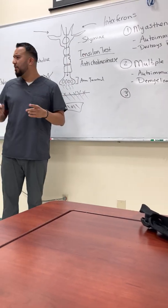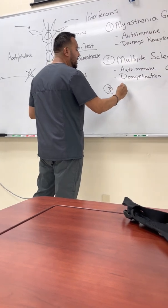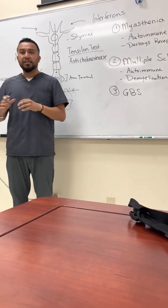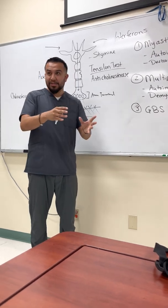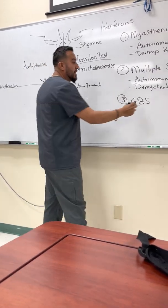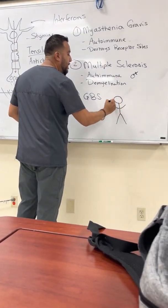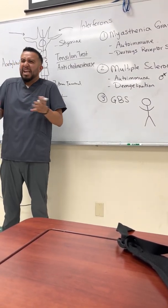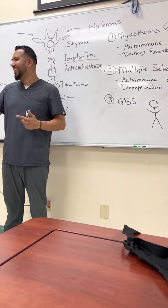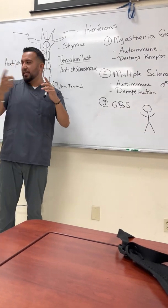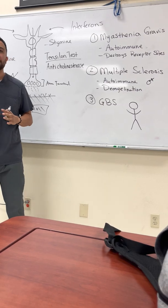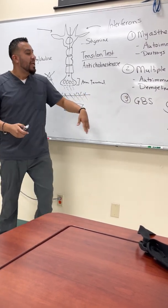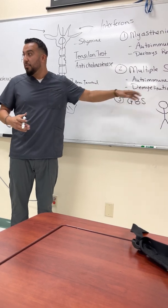The third condition is Guillain-Barré syndrome, or GBS. This is also demyelination, but it happens in an acute fashion and is not progressively chronic — if you survive it, you recover. In GBS, something activates the immune system — it could be a vaccine, a bacterial or viral infection, even a minor wound. The immune system then overreacts and starts destroying the myelin sheath.